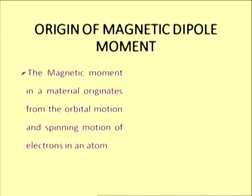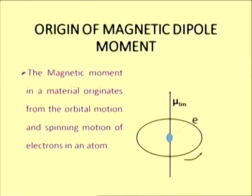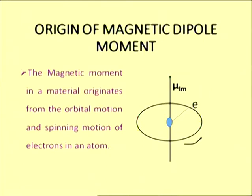The origin of magnetic dipole moment: the magnetic moment in a material originates from the orbital motion and the spinning motion of the electrons in an atom. Electrons are moving around the nucleus, but even if an electron is at rest it has got an intrinsic angular momentum associated with it. With that inherent property, it has associated with it a net spin magnetic dipole moment, known as spin magnetic dipole moment. Here is the case of an electron moving around the nucleus in a certain orbit, with magnetic dipole moment mu_l for orbital motion.